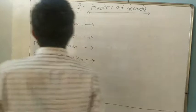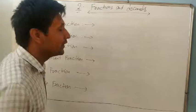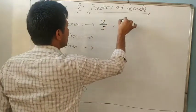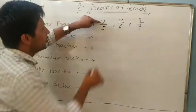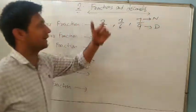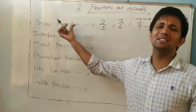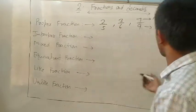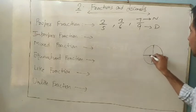A proper fraction means when the numerator is less than the denominator. For example: 2/5, 3/6, 7/9 — in all these, the numerator is less than the denominator. You can also say that a proper fraction always represents a part of a whole. For example, if you have a bread and divide it into 4 equal parts, one part is a proper fraction.